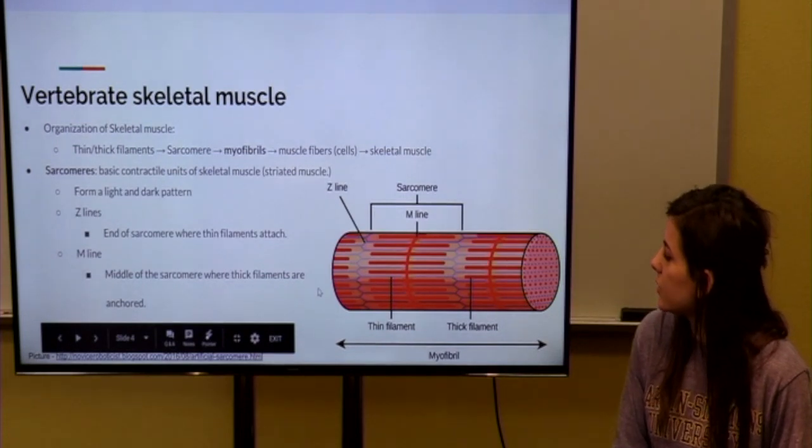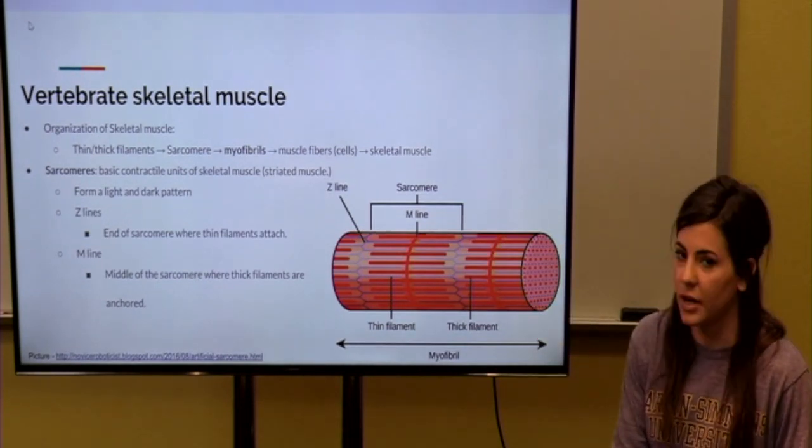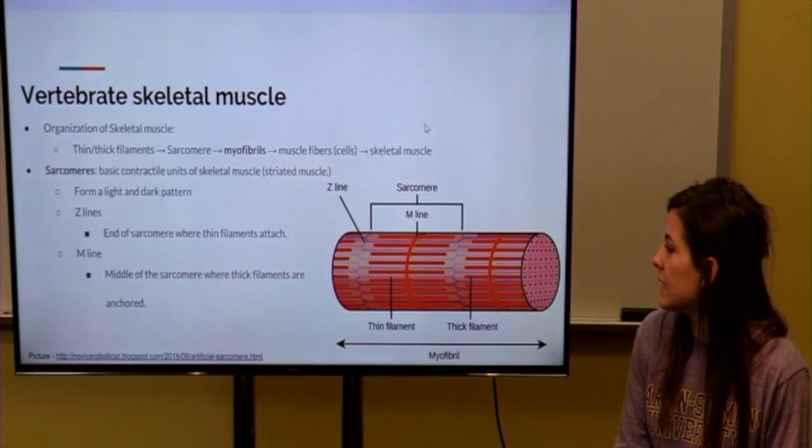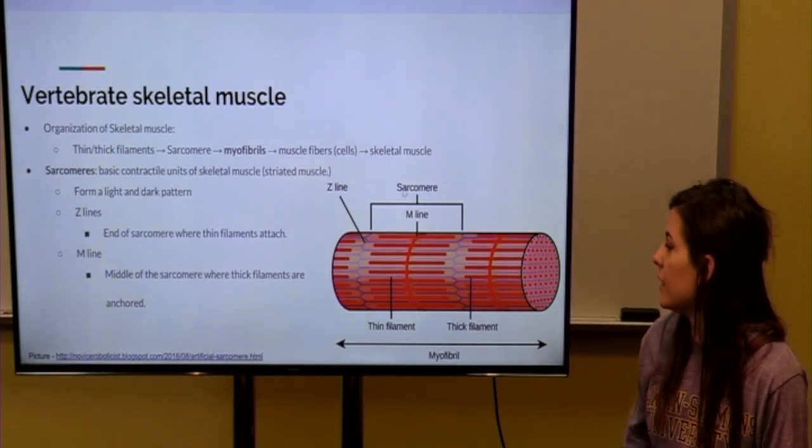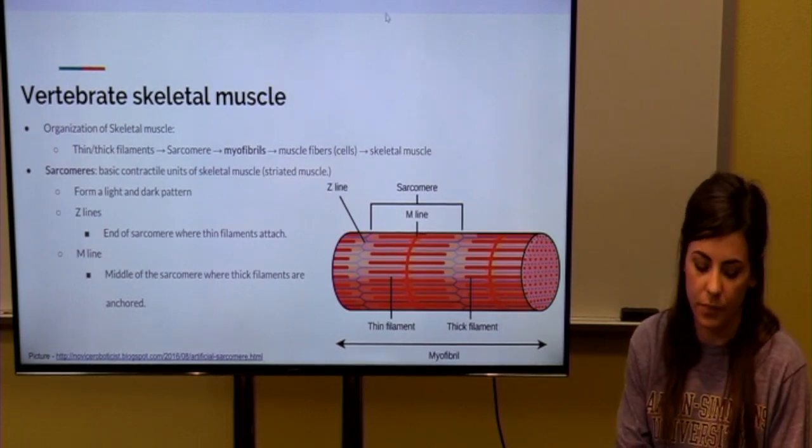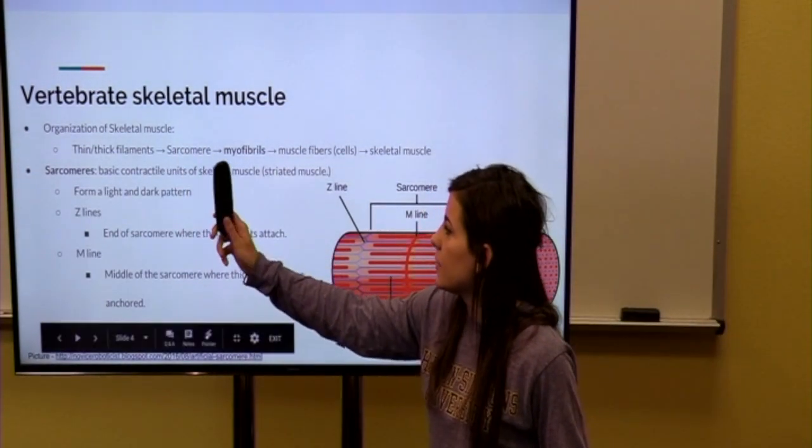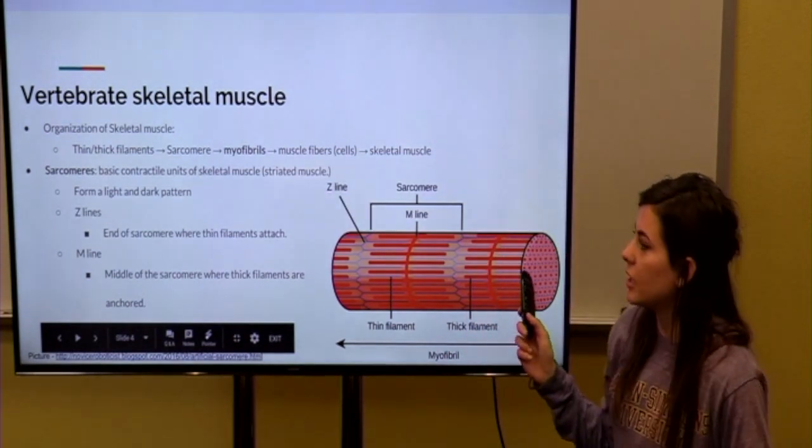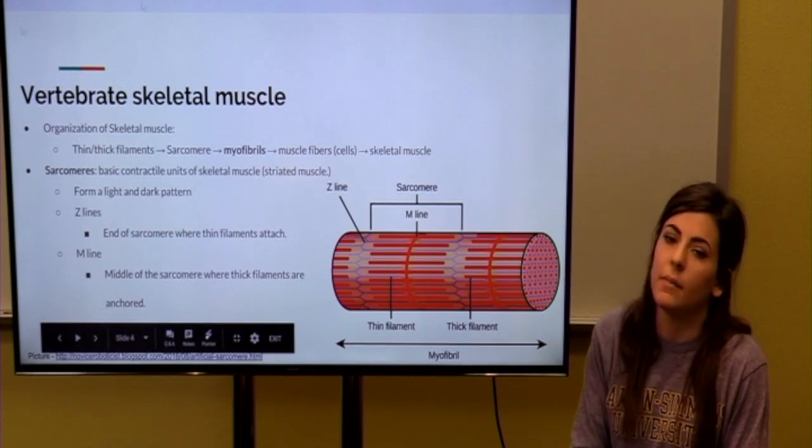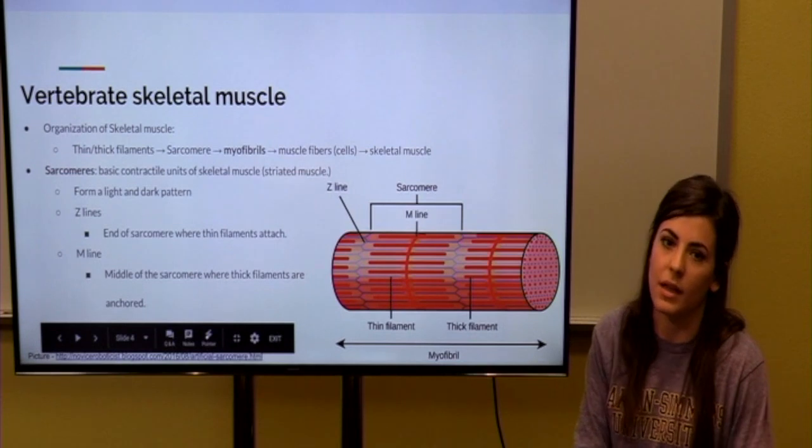Now, these filaments make up the sarcomeres. Sarcomere is the basic unit of our skeletal muscle. And you can see here that it's a pattern of light and dark lines. The dark lines are the myosin and the thin lines, which are the lighter color, are the actin protein. The organization of our skeletal muscle starts with the thin filaments that make up the sarcomere, and then the sarcomeres connect end to end and make myofibrils. And then bundles of myofibrils make up muscle fibers or cells, which then make up the skeletal muscle.